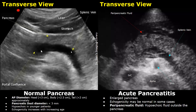This is the splenic vein behind the body and tail. The superior mesenteric vein and splenic vein join together to form the portal confluence, or SMV and splenic vein confluence. In the image on the right, we have a case of acute pancreatitis.